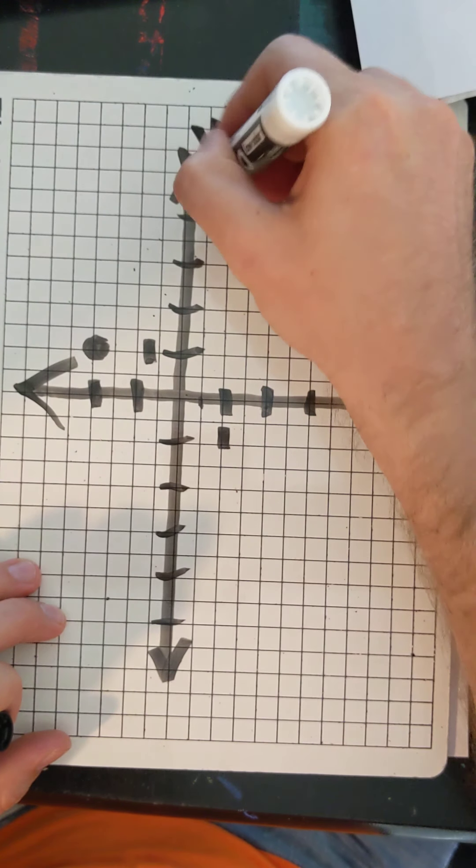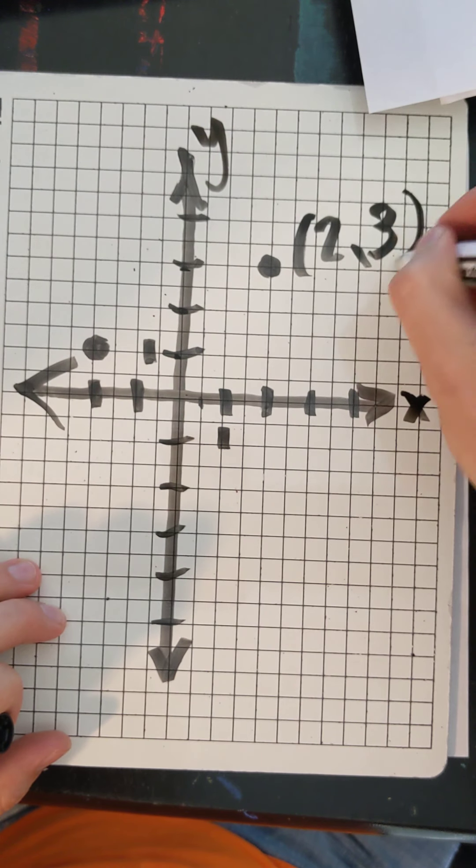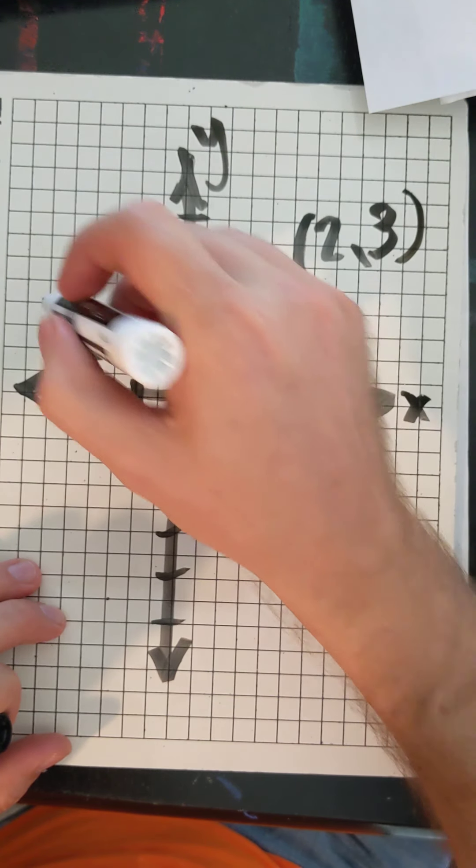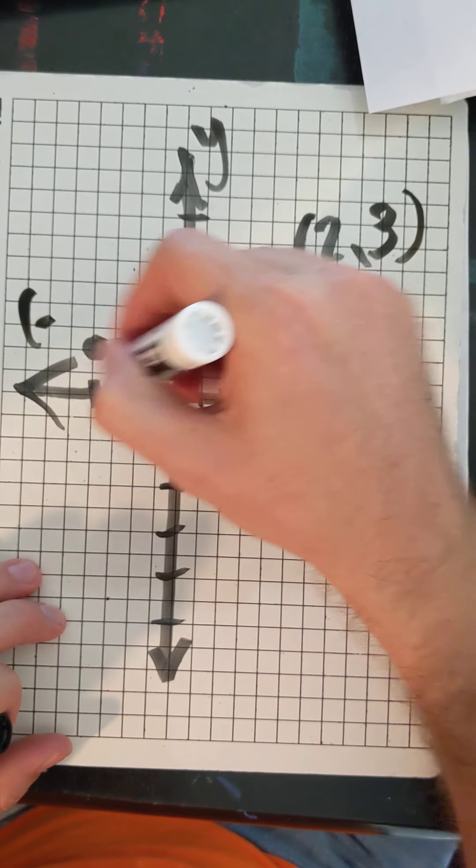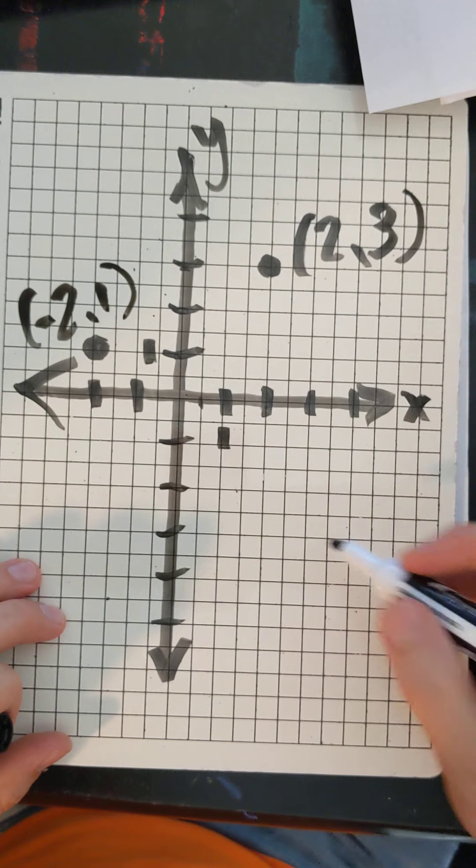Remember, x values come first, then y values. And then we go up one, two, three. Two, three. Cool. And we have this other midpoint that's over two. And remember, it's two to the left of the axis. That's a negative two. Up one.